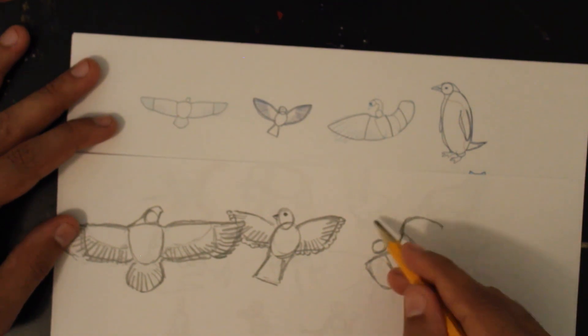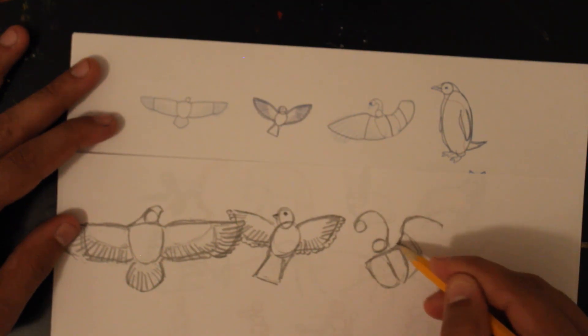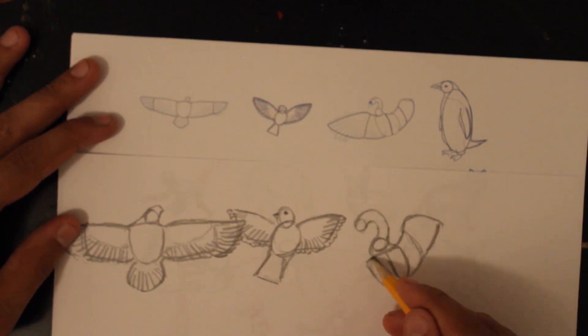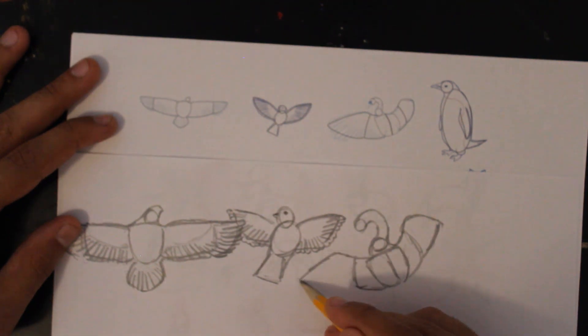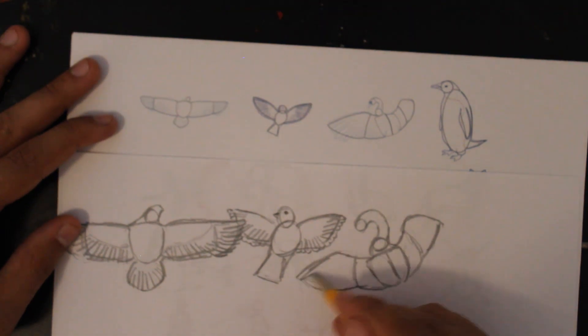Just do the shape. This is the swan. And just quickly we're going to put in some details.